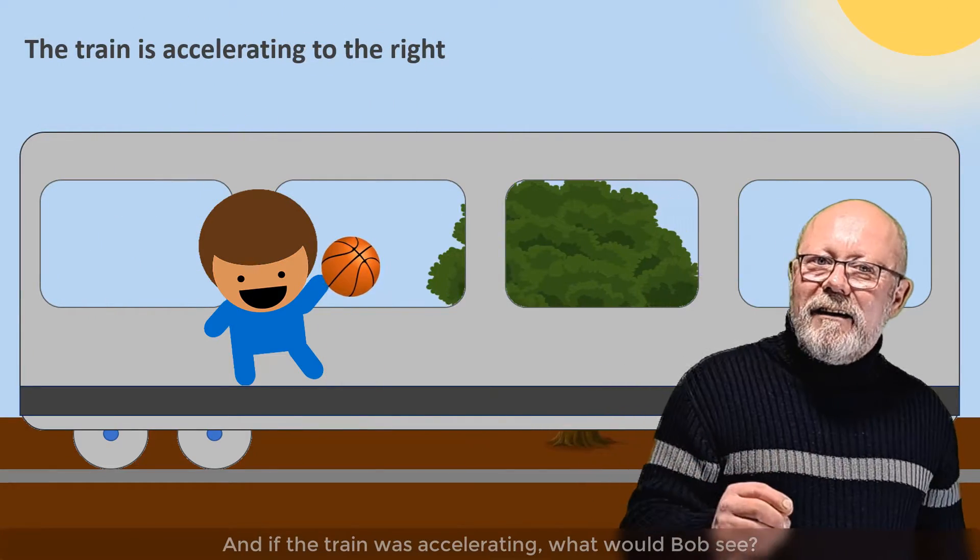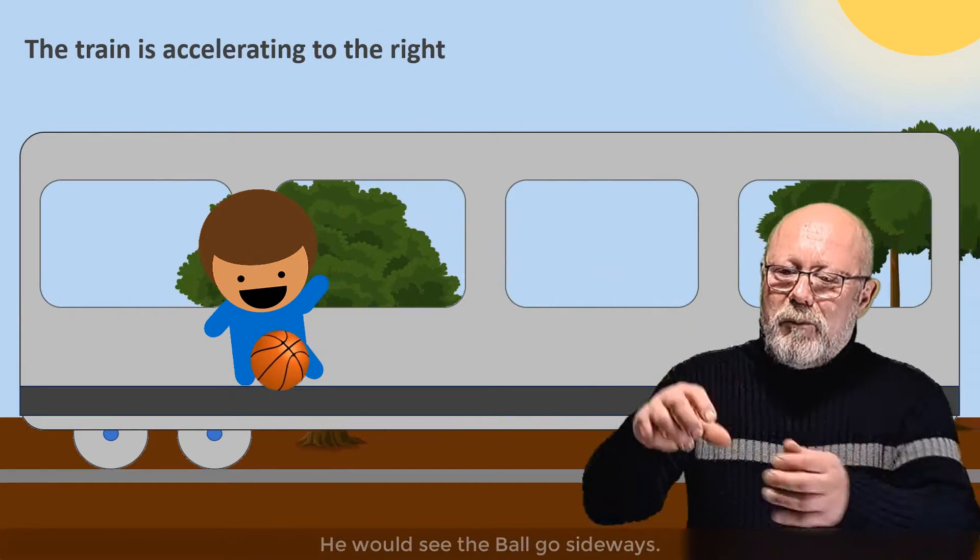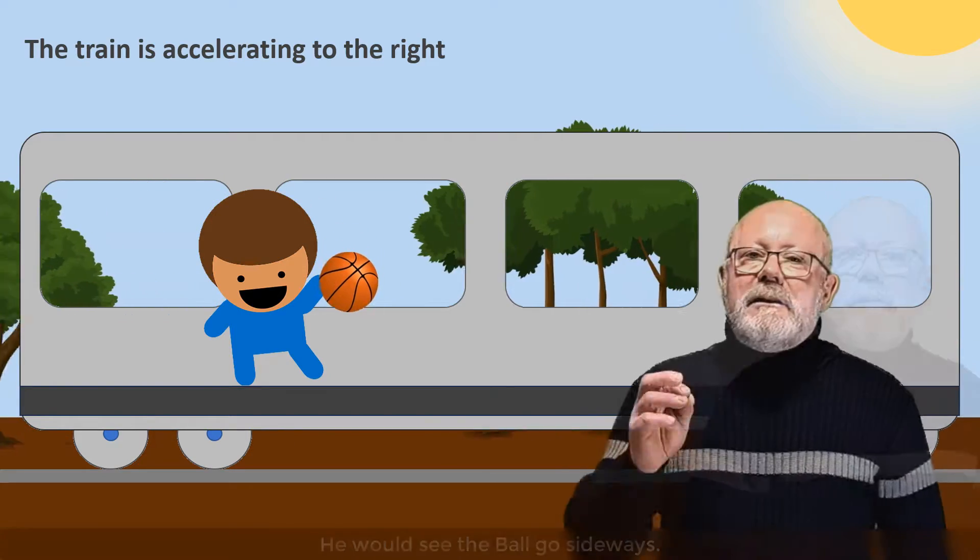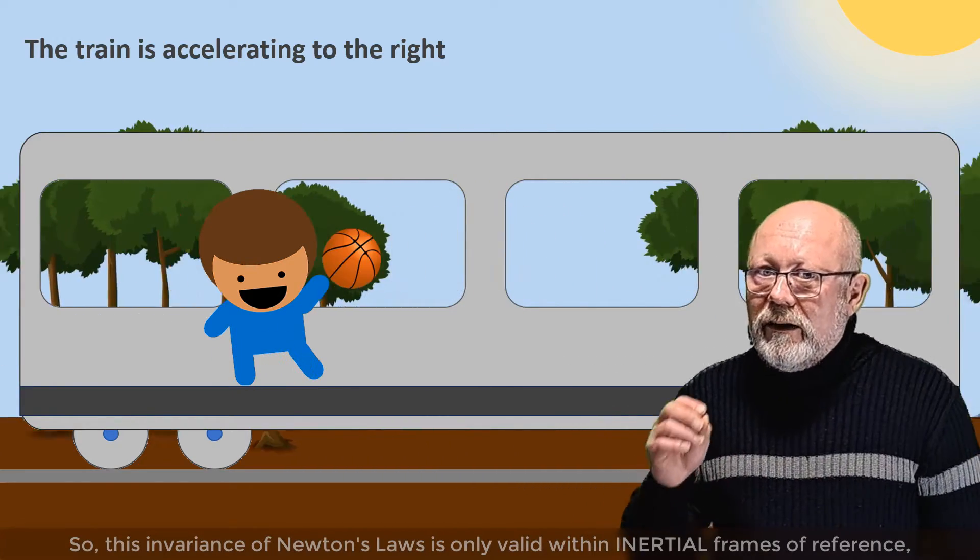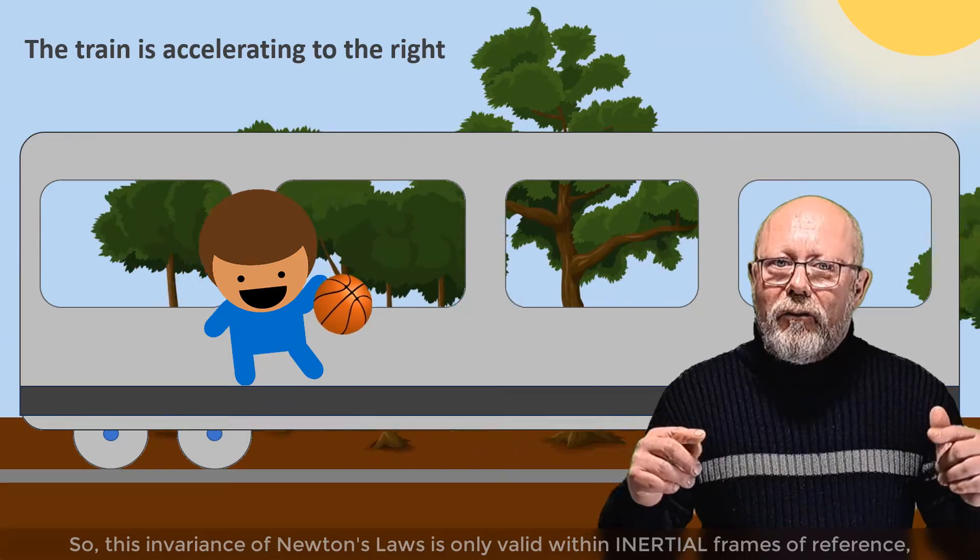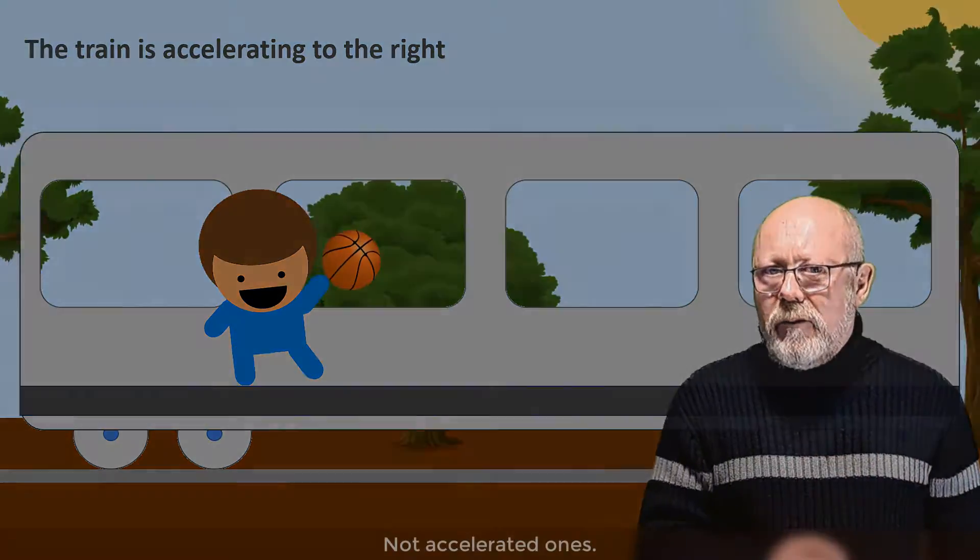Note that if the train was accelerating, what would Bob see? He would see the ball go sideways. So this invariance of Newton's laws is only valid within inertial frames of reference, not accelerated ones.